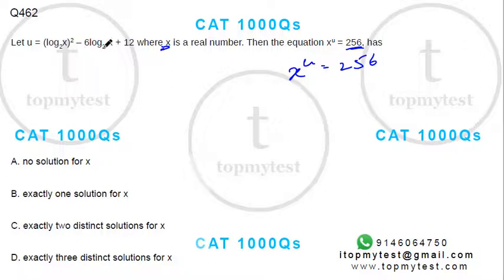If you look at it, everything is in log to the base 2 here, so let's take log to the base 2 here also. If I take log on both sides, you'll get u times log base 2 of x